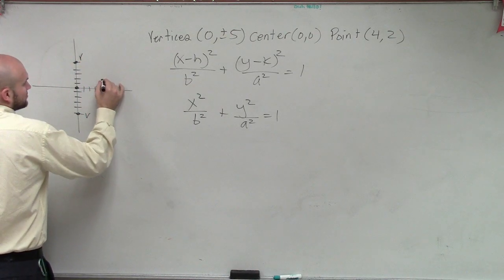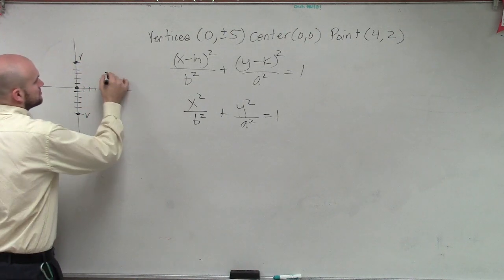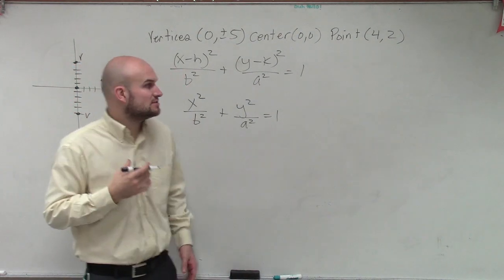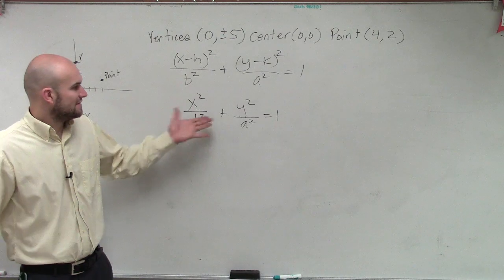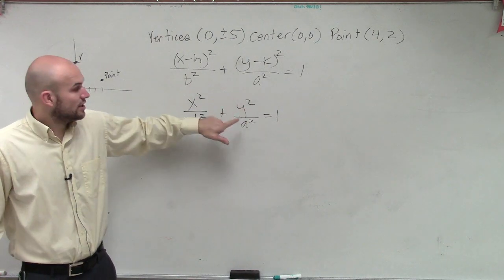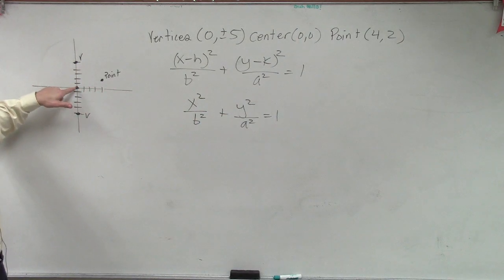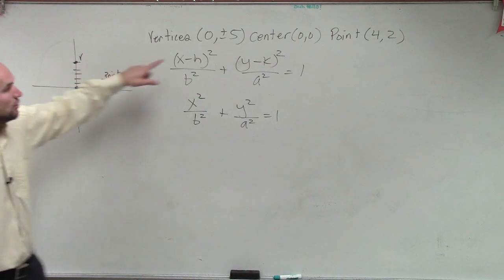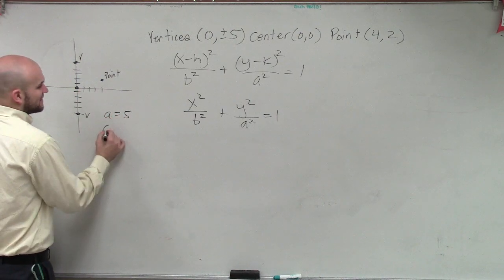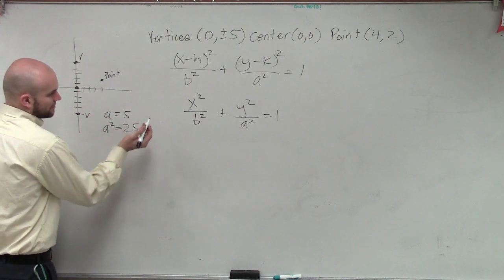But they did tell us it goes through a point four comma two. One, two, three, four, two. What is that? Well, what is a point? Remember, we actually talked about it before we go to class again. So we have an a, b, and x of y. We know a is the distance from the center to your vertices, which in this case is five. Right? So if a equals five, then we can say a squared equals 25.